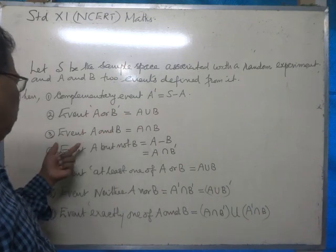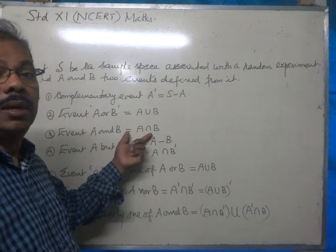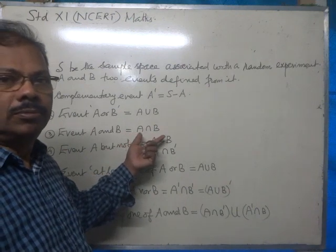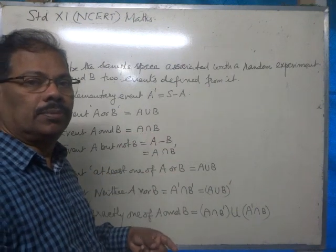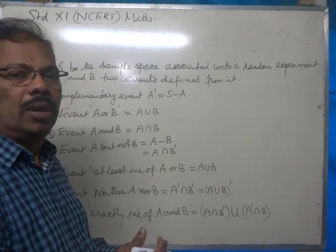Now, the event A and B means A intersection B. Those elements appearing in the intersection of A and B.